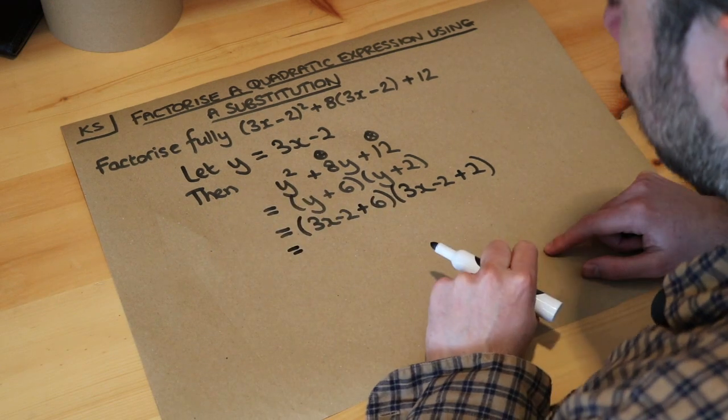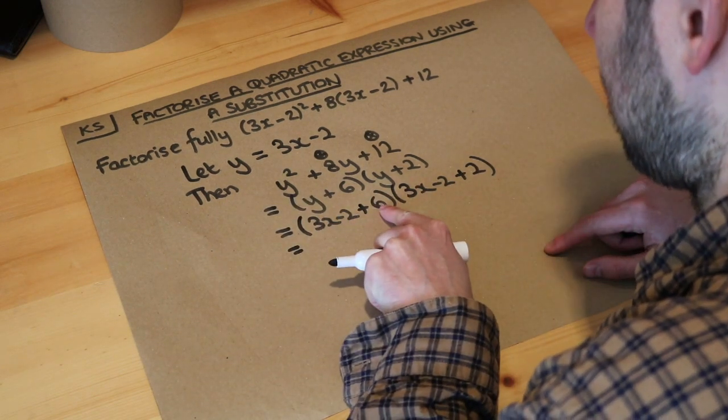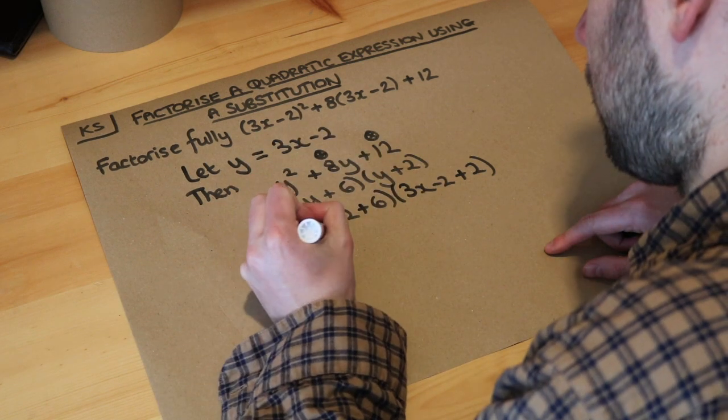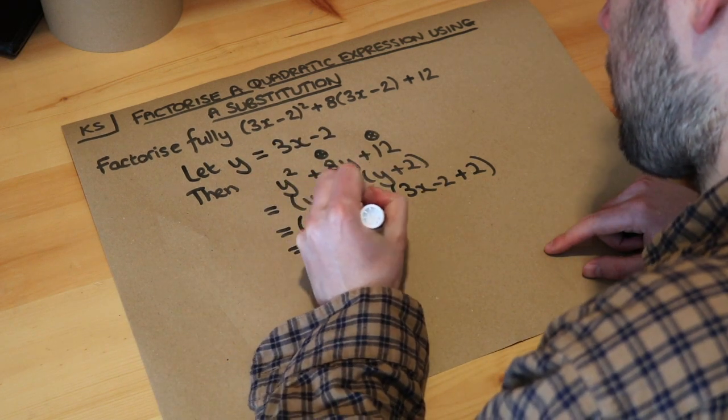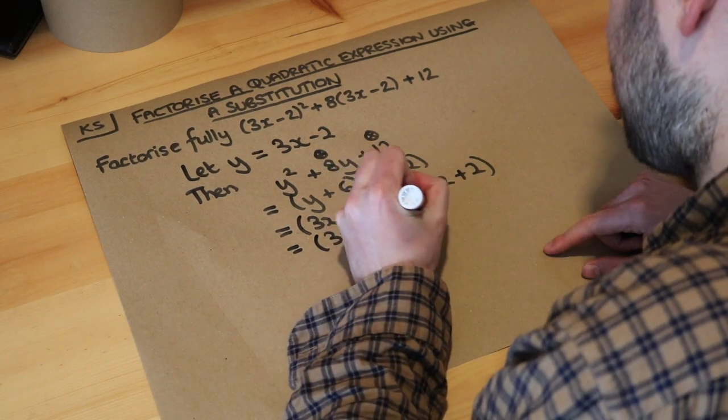And then if we just simplify each of these brackets by collecting like terms, well the minus 2 plus the 6 is plus 4. So we have 3x plus 4. And then the minus 2 plus 2 they just cancel so you're just left with the 3x.